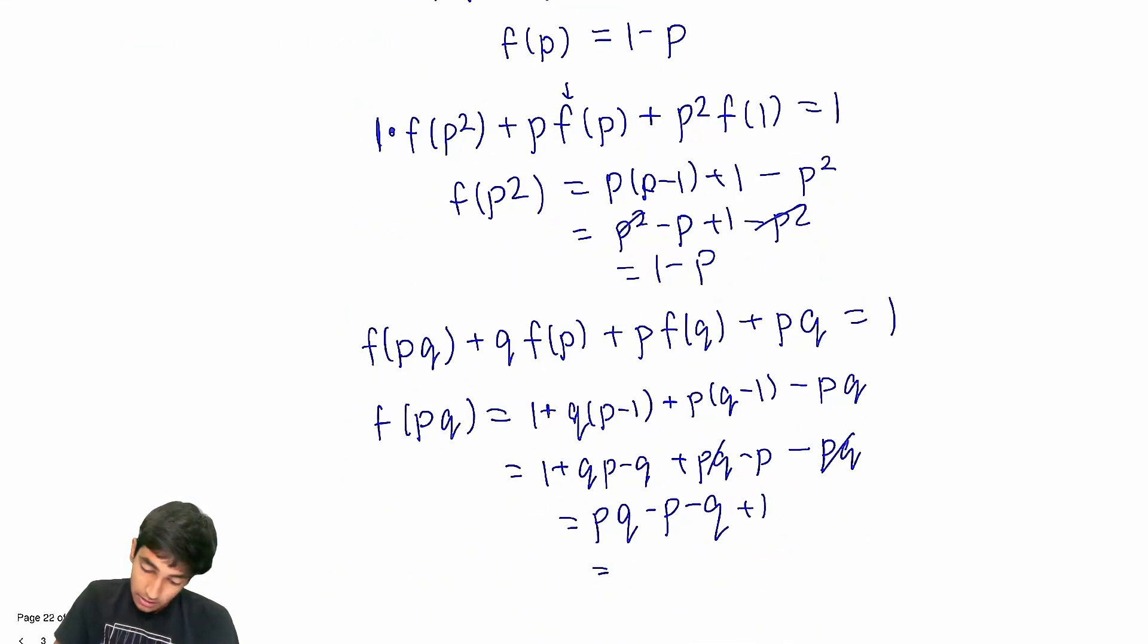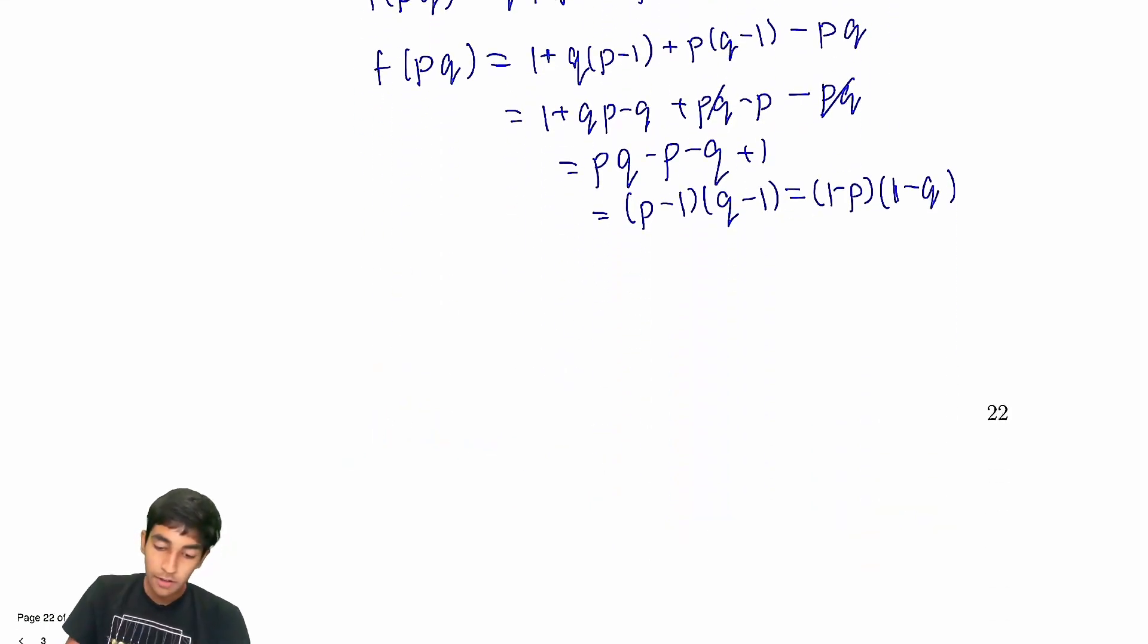And, this is just (p-1)(q-1). Interesting. And, notice that we can also rewrite it like this. And, that's actually kind of cool, right? Because, that's just f(p) times f(q). Okay, so now we found f of pq.